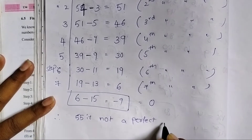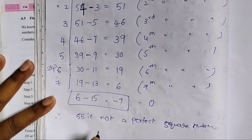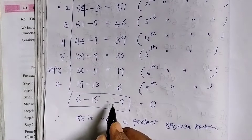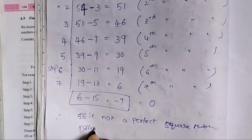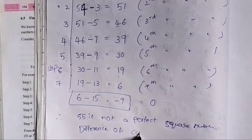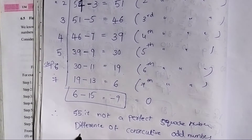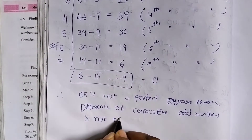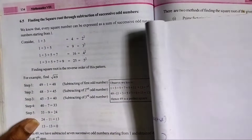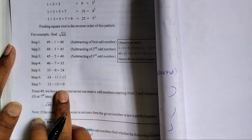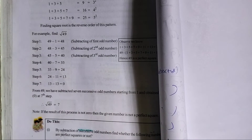55 is not a perfect square number. When the difference of consecutive odd subtractions is not equal to 0, the number is not a perfect square. If we reach 0, then it is a perfect square. Next question.